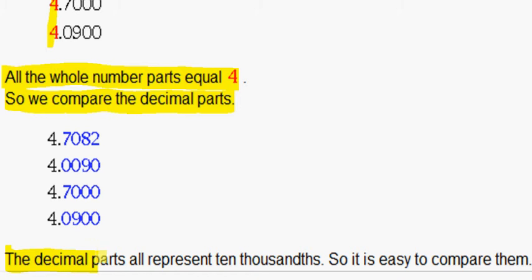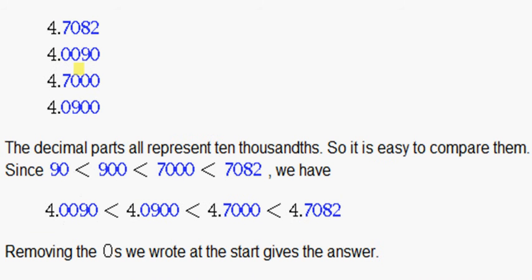The decimal parts all represent ten thousandths. So it is easy to compare them. So we look and see which has the smallest number. It's this one. It has 90. So we can write 90 because we are just comparing the decimal parts right now.